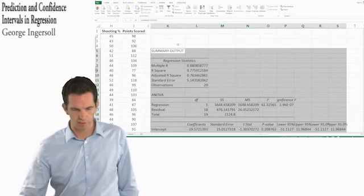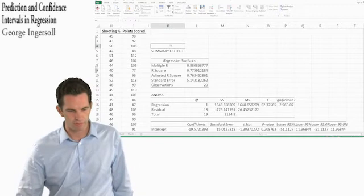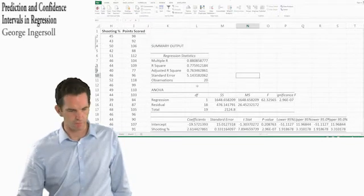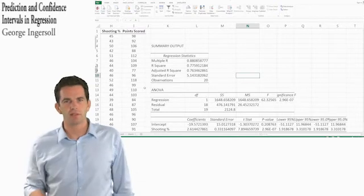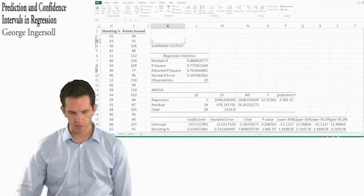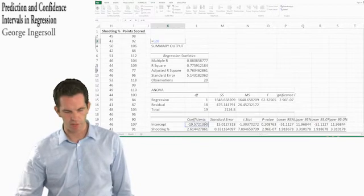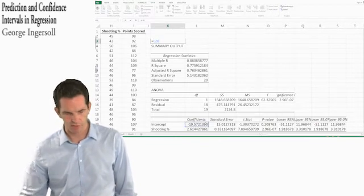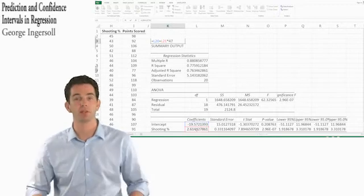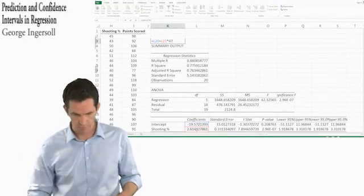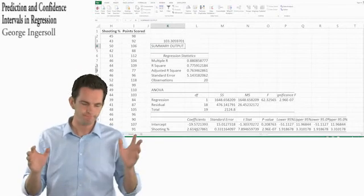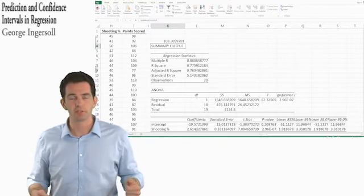Now this time I put my summary output here on the same sheet. If we had a shooting percentage of 47, what would we predict as the value for points scored for this team? Well, that's pretty easy to do. We just use the coefficients that we retrieved from regression, so there's an intercept of negative 19.57, add that to the shooting percentage coefficient, and multiply that by 47% shooting. And that told us that we could expect the team to score about 103 points if they're shooting 47%.